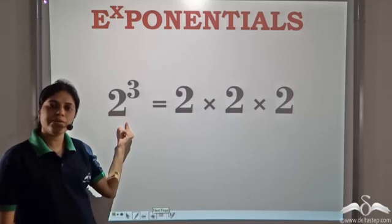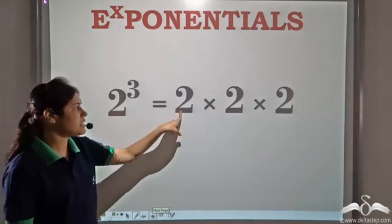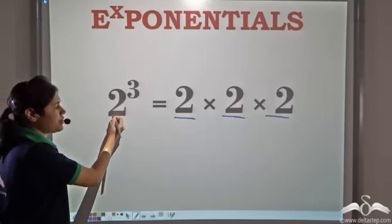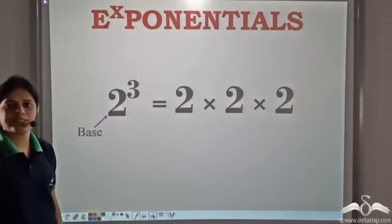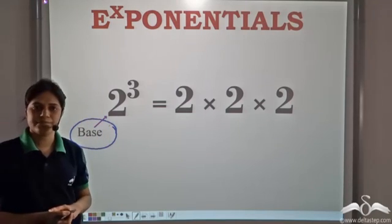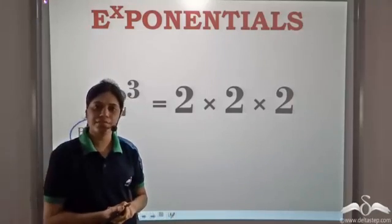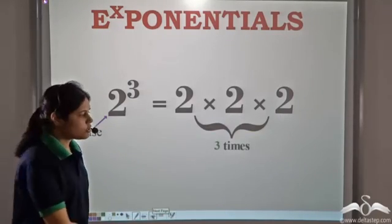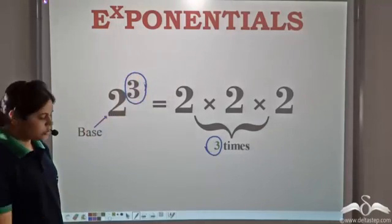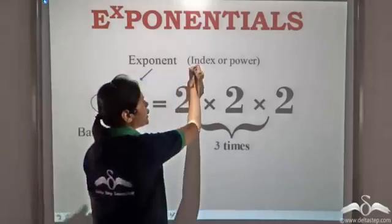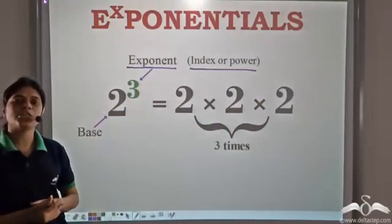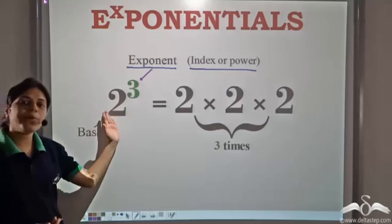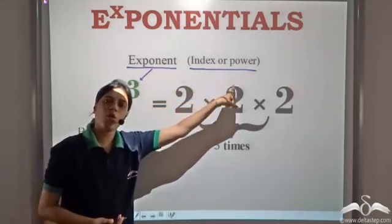So this is an exponential number. In this case, the number being multiplied is two — two is the base. And how many times is two being multiplied? Two is being multiplied three times. So this three is called the exponent, or the index, or power. So two — the number which is being multiplied — is called the base, and the number of times it is being multiplied is called the exponent, index, or power.